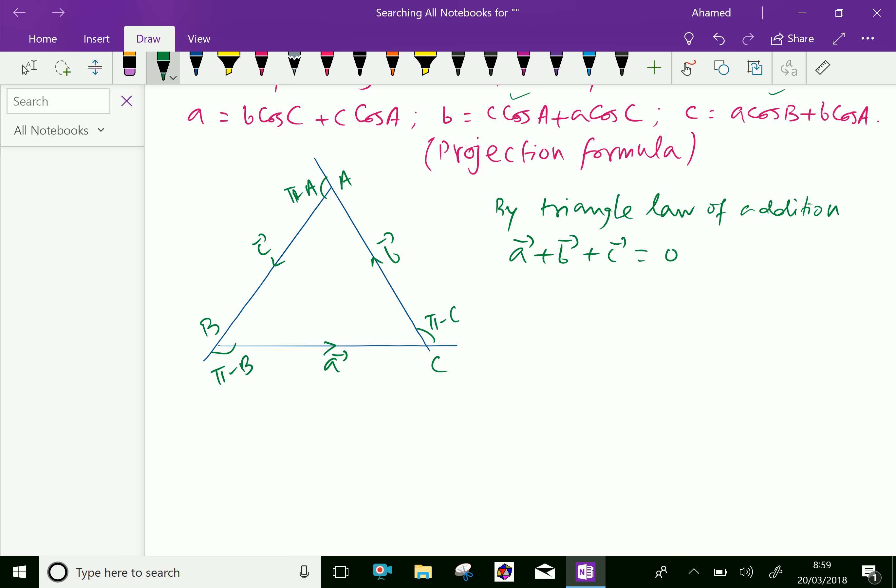Now multiply with vector a with dot product, vector a dot vector a plus vector a dot vector b plus vector a dot vector c equals zero.